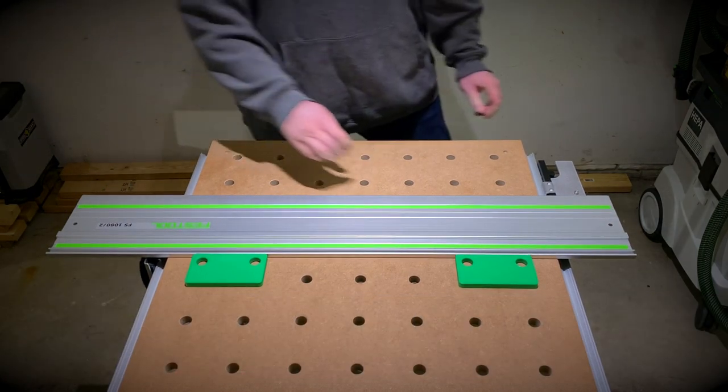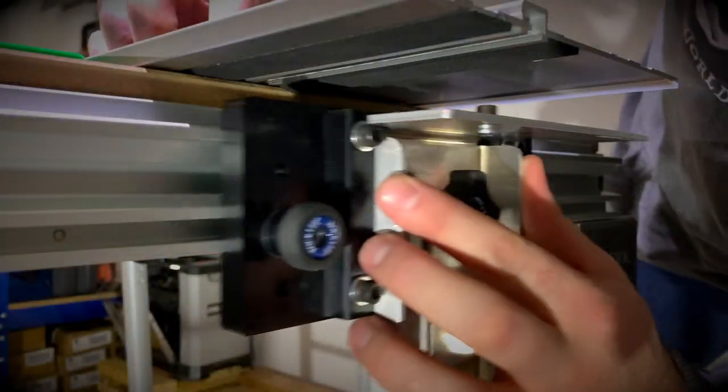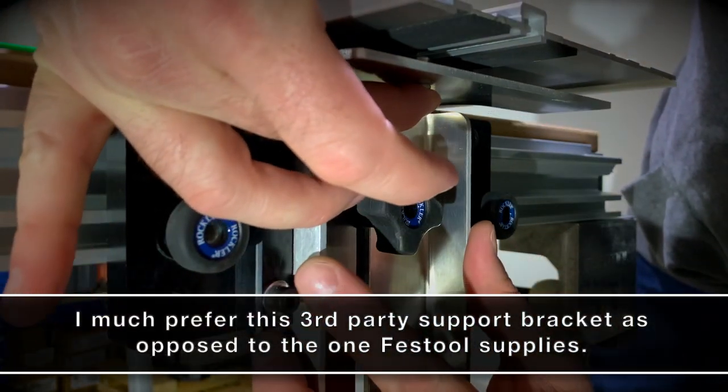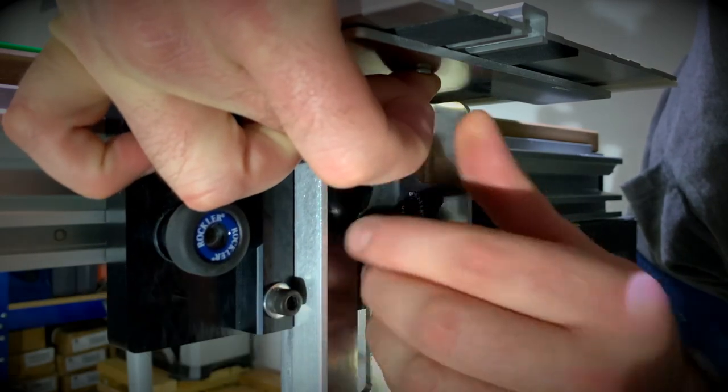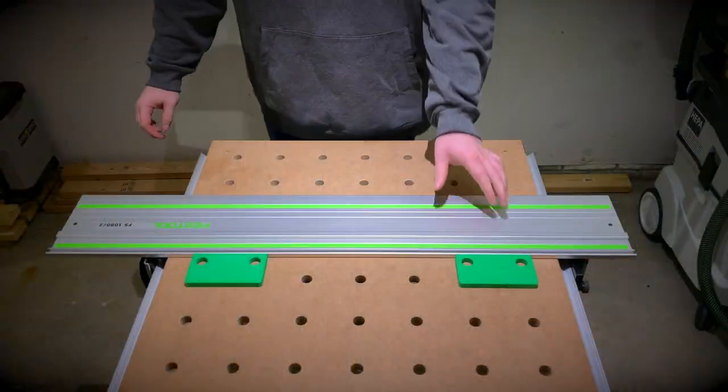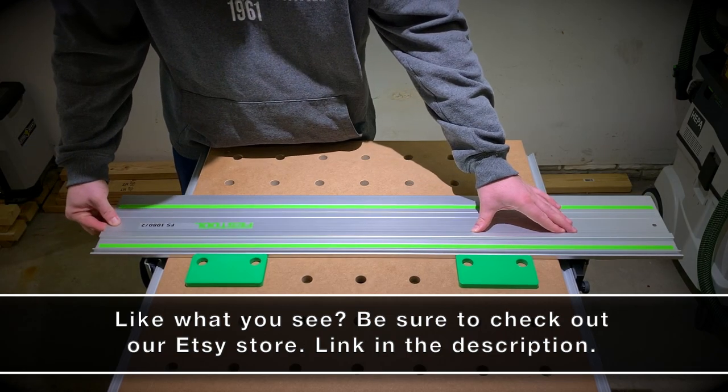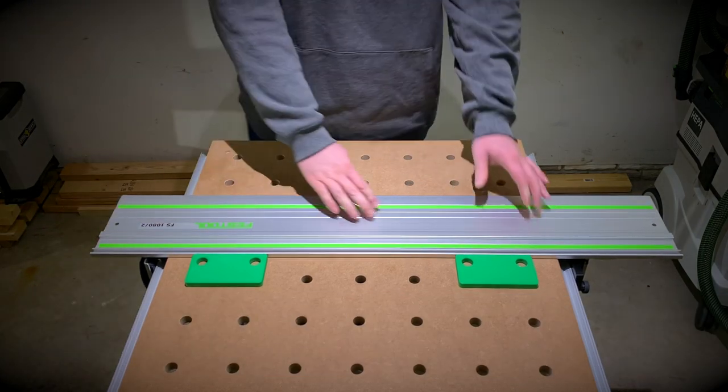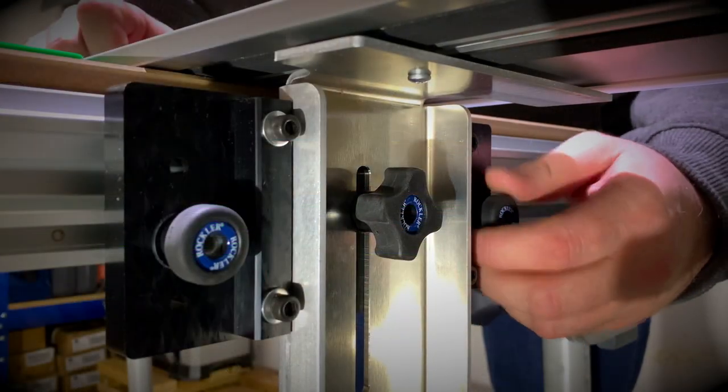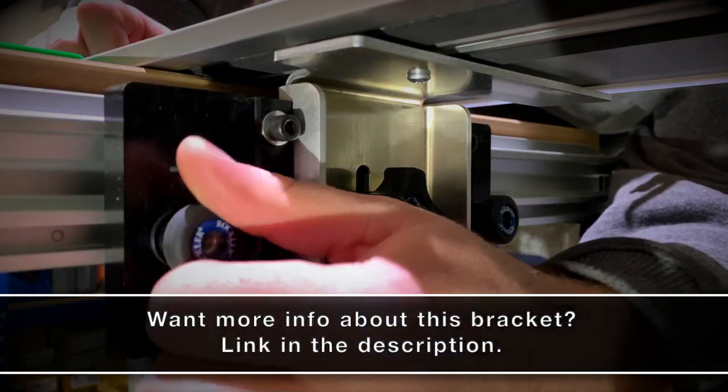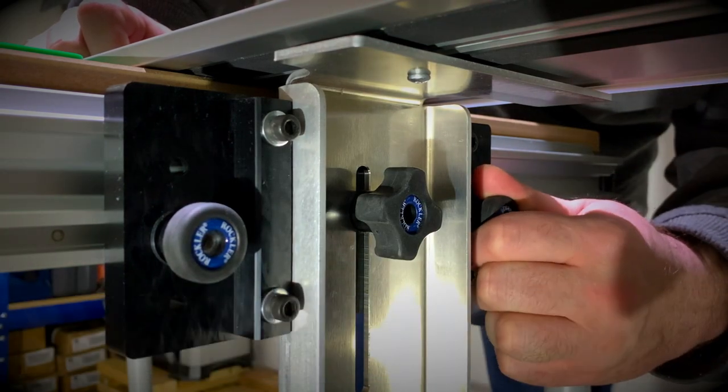Next, slide the front bracket support under the guide rail and raise it so the pin, or notch if you're using the Festool bracket, is in the slot of the guide rail. Then lock that height into place. Now as you slide the guide rail, be sure to keep it flush against the blocks. Once you have the rail positioned where you want it, lock the front bracket into place, and then tighten the feather key that's inside the guide rail on the hinge bracket.